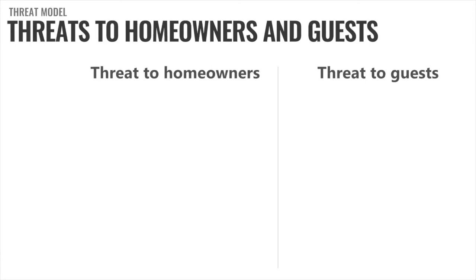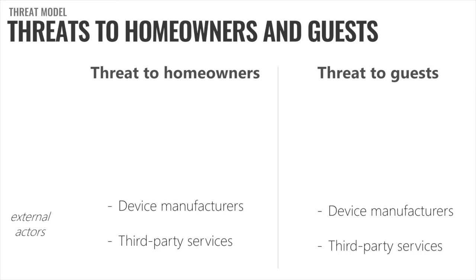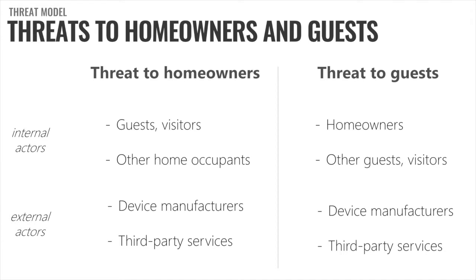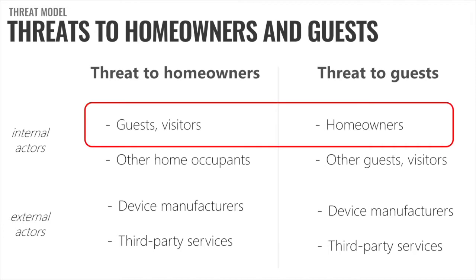If you try to map the threats and potential adversarial actors for both homeowners and guests, we would have device manufacturers and third-party services, which are external actors — they do not have physical access to devices. And internal actors — people who can get physical access to these devices — so those are guests or visitors, other home occupants, or for guests, they would be the homeowner or other guests. The focus in this work was the threat to homeowners from guests and the threat to guests from homeowners, and this is especially important if guests and homeowners are strangers, which is generally the case for short-term rentals.